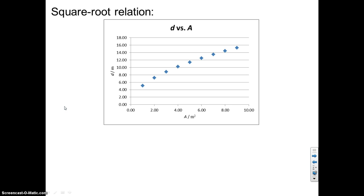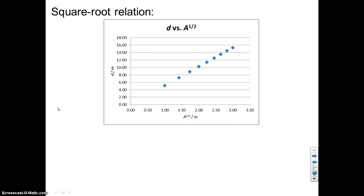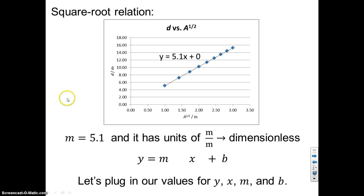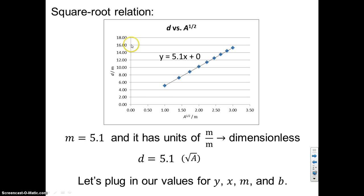For the square root relation example with diameter D and area A: we linearize by plotting the square root of A on the x-axis. The best fit line gives a slope of 5.1, with units of meters over meters — dimensionless, so no units for this slope. The y-intercept is 0. Our model is: D = 5.1 · √A. That equation relates the y and x quantities.